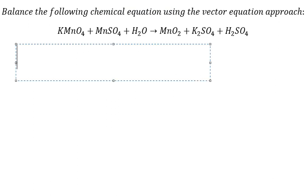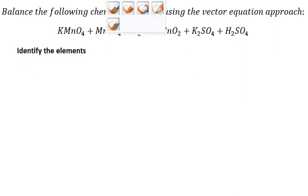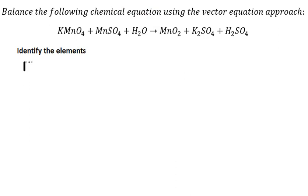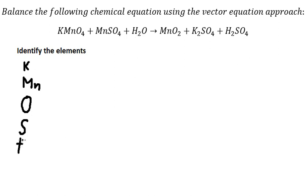The first thing we need to do is identify the elements. So we have potassium (K), then we have Mn (manganese), the next one we have oxygen, then we have H, and the last one we have hydrogen.